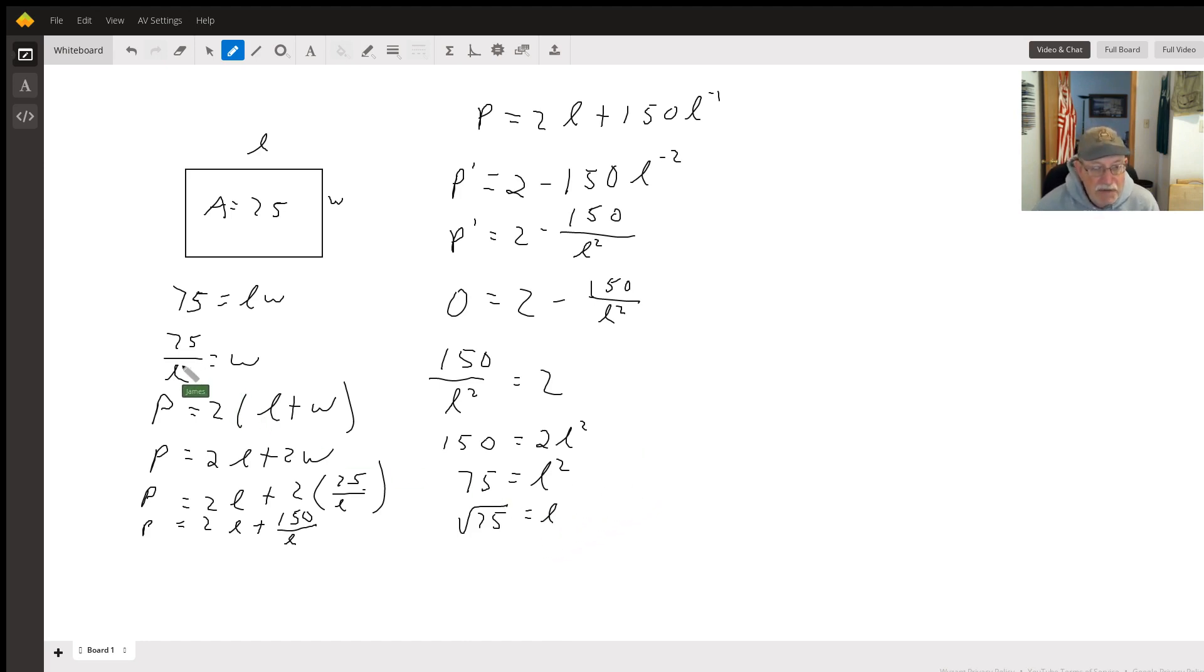So that's what L is going to equal. Then I'm going to plug that back in to my W equation and I'll get 75 over the square root of 75 equals W. Well if you think of it, 75 is 75 to the first power, square root of 75 is 75 to the one-half power, so we can change that back to square root of 75 equals W.